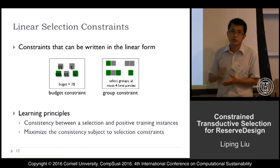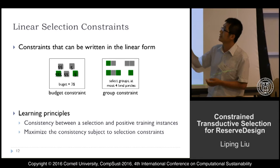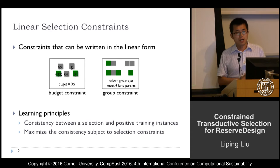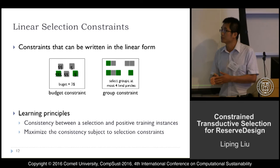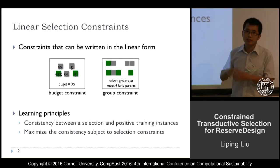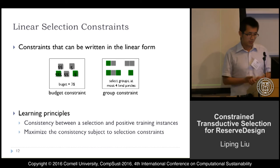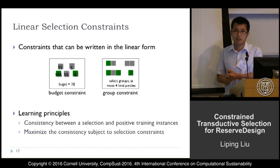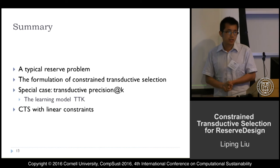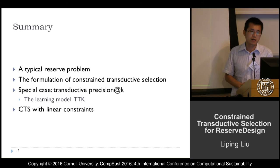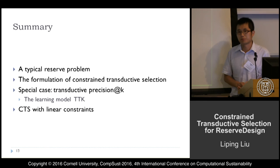The learning principle is the same as the special case: we need to characterize the consistency between the selection of land parcels and the positive training instances, and then maximize that consistency. This work is still ongoing, so I don't have results yet. In summary, we addressed the reserve design problem. For the special case, we have the TTK method, and we are also working to solve the general problem with linear constraints. Thank you very much.